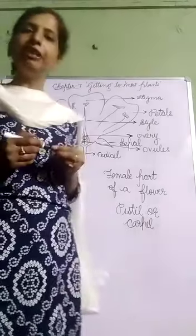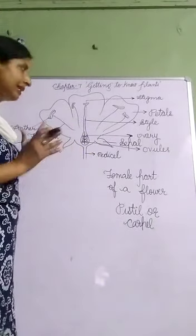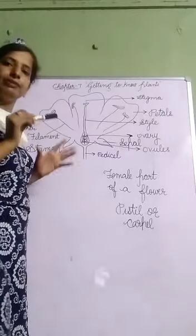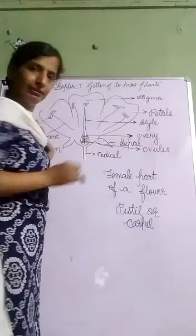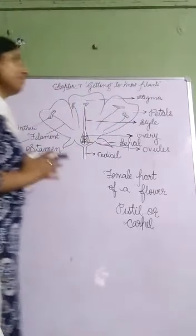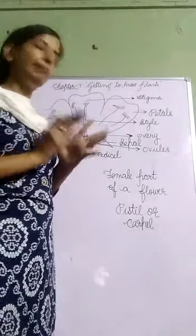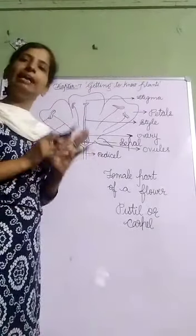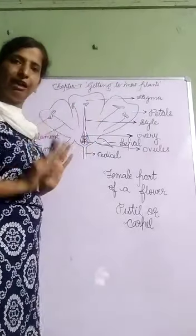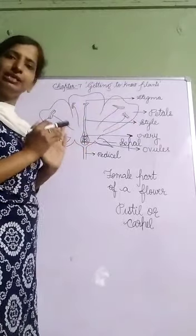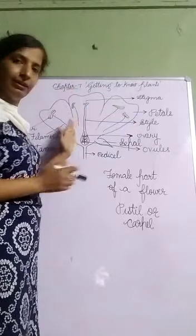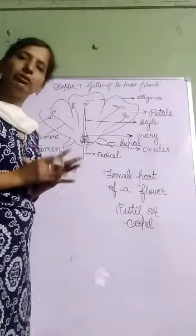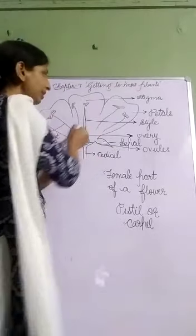So now you have learnt the different parts of a flower. Let's understand them once again. The stalk of a flower is called the pedicel. Green leaves present on the flower are called sepals. The colorful leaves of a flower are called petals — the most beautiful and attractive part. Now a flower has male and female parts. The female part, which is in the center of the flower, is called the pistil, or we can also call it carpel.